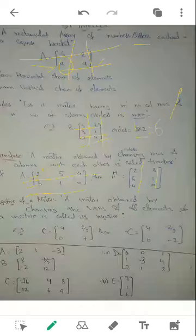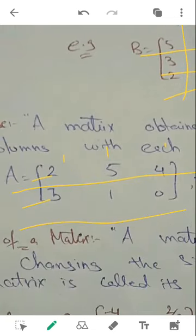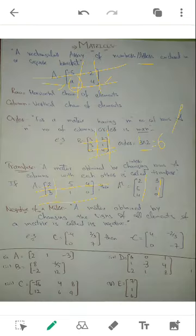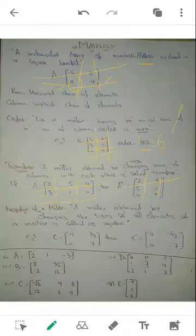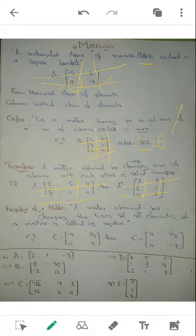There is another equivalent method: read column by column and write each column as a row. First column is 2, 3 — write as first row. Second column is 5, 1 — write as second row, and so on. Either method works, but do not mix both — choose one approach consistently.